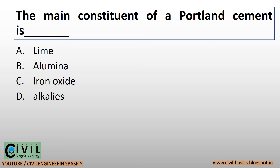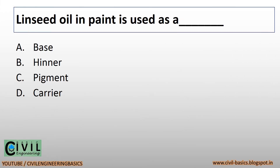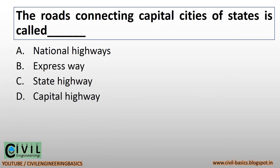The main constituent of Portland cement is lime. Linseed oil in paint is used as a carrier. The roads connecting capital cities of states are called state highways.